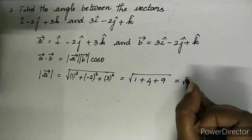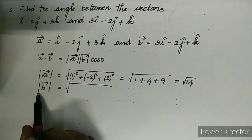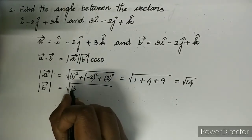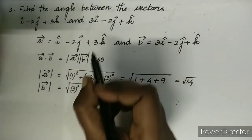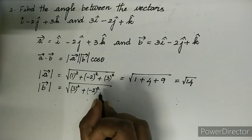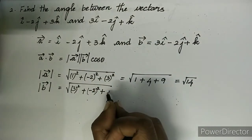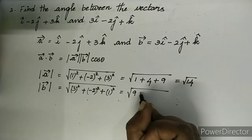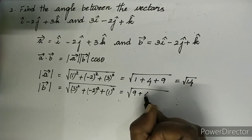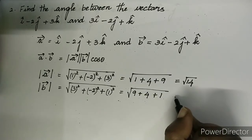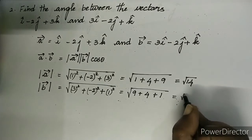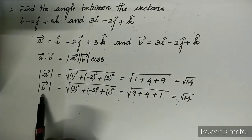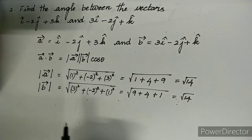Similarly, magnitude of B = √(3² + (−2)² + 1²) = √(9 + 4 + 1) = √14. We have found magnitude of A and magnitude of B, both equal to √14. Next we will find A·B.